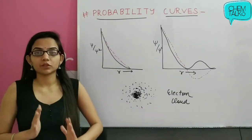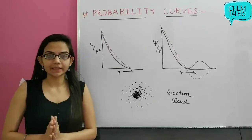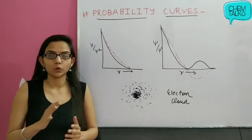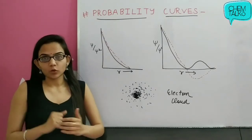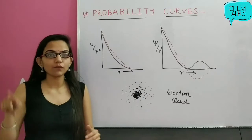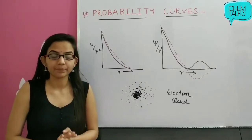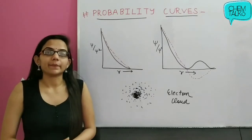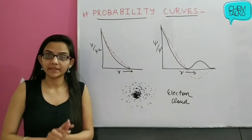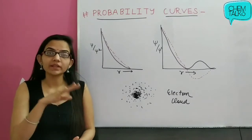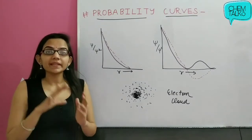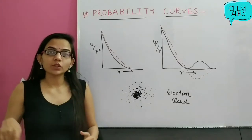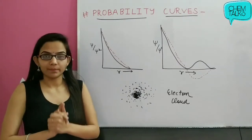The topic is probability distribution curves. Before we start this topic, we will understand what probability means here. We have said that an electron in an atom revolves around the nucleus in orbits. Basically, the region surrounding the nucleus where there is maximum probability of finding the electron — we define that region using orbitals.